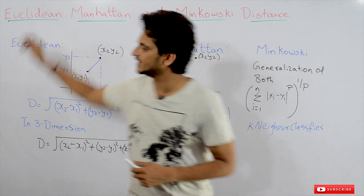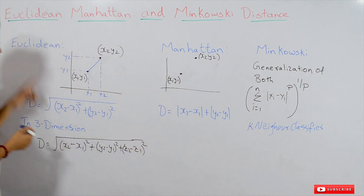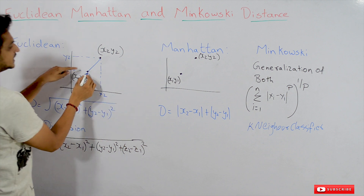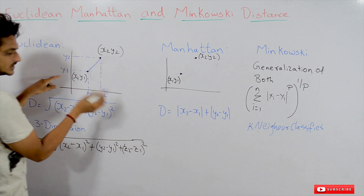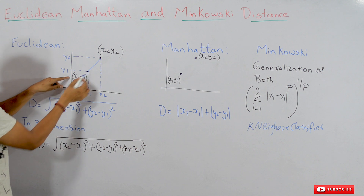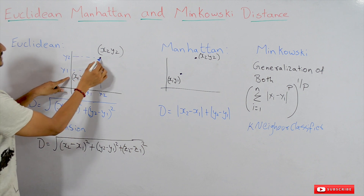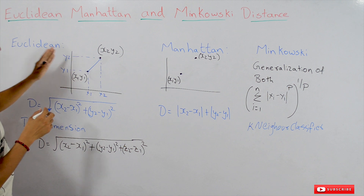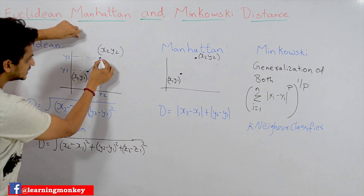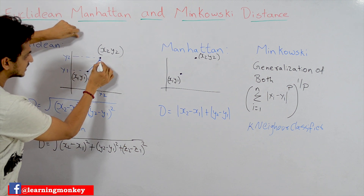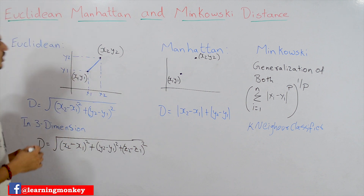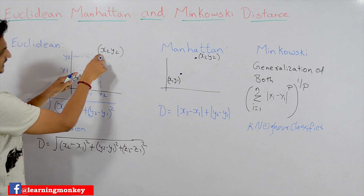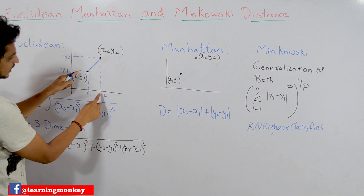Coming to Euclidean distance — to calculate it, take an example. We have a two-dimensional coordinate space with point x1, y1 and another point x2, y2. If you want to calculate the distance between these two points, the minimum distance between them is represented by this straight line.